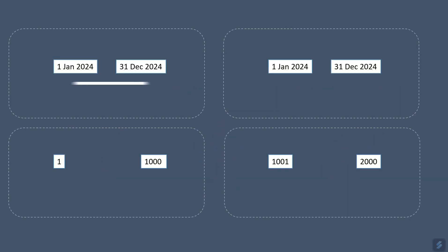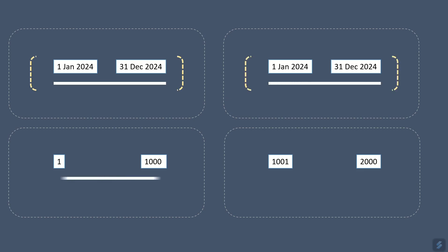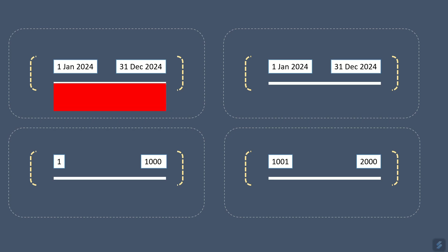There are two sharding strategies. First, range-based sharding divides data based on ranges of a key, such as date ranges or numerical ranges. This method is simple but can lead to unbalanced shards if the data distribution is uneven.